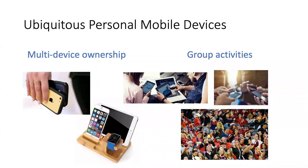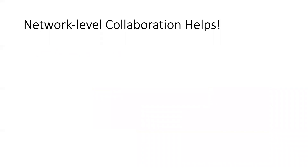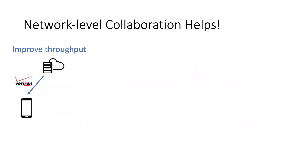Mobile devices are everywhere. We use them at home, at work, indoors and outdoors. Many people today possess more than one personal device, such as multiple smartphones, or smartphones paired with smartwatches and tablets. When people gather together, their mobile devices do as well. This ubiquity of mobile devices creates abundant opportunities for better utilizing available network resources. For instance, one device can assist another with downloading data over cellular.